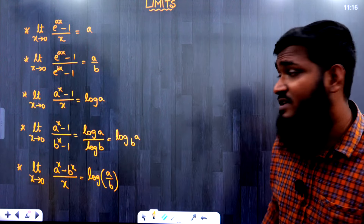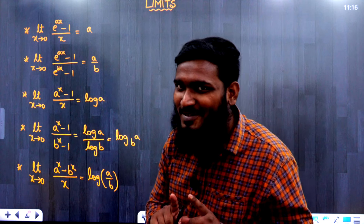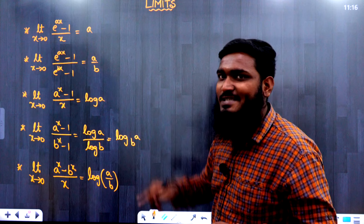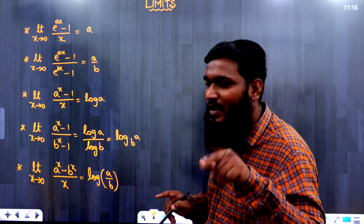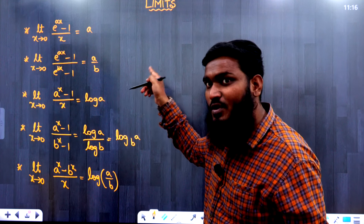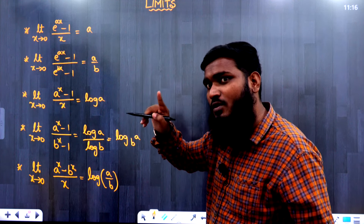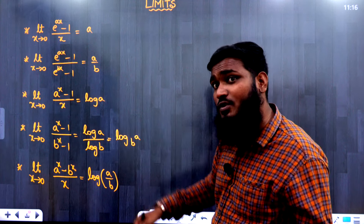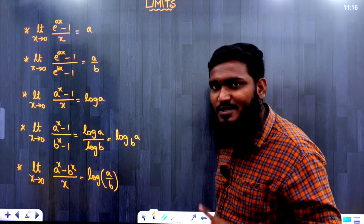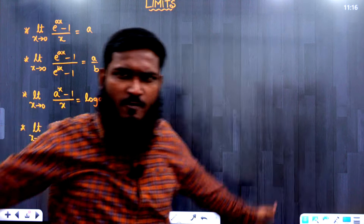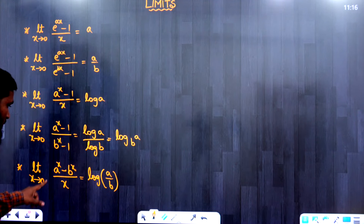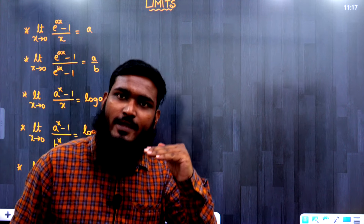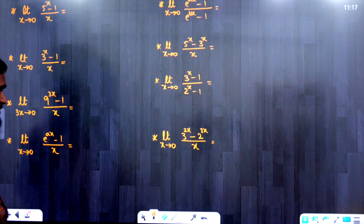Now let us revise. Revision is important. Limit x tends to 0: e^(ax) minus 1 by x equals a. e^(ax) minus 1 by e^(bx) minus 1 equals a by b. Next, a^x minus 1 by x equals log a. If you are having a^x minus 1 by b^x minus 1, it equals log a by log b or log a base b. Last one: limit x tends to 0, a^x minus b^x by x equals log(a/b).